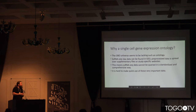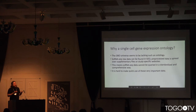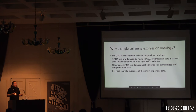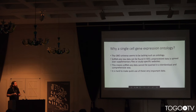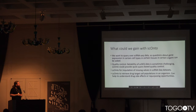Why do a single-cell gene expression ontology? The OBO universe doesn't seem to have such an ontology. Single-cell RNA-seq raw data can be found in the Gene Expression Omnibus by NIH, and pre-processed data is usually spread across supplementary materials or specific project websites for each paper. That's not easy to reuse — it's not standardized, not comprehensive, and it's hard to make quick use of the data because a lot of pre-processing is required.